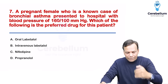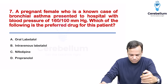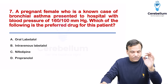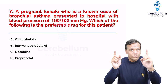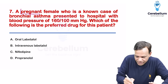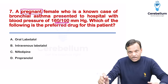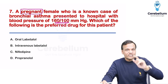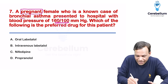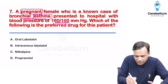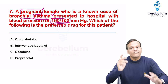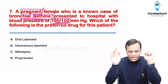A pregnant female who is a known case of bronchial asthma presented with BP 160/100 — which is the preferred treatment? Read the question carefully: there is pregnancy AND asthma. Antihypertensive drugs safe in pregnancy are remembered as 'better mother care during hypertensive pregnancy': beta-blockers (labetalol), Methyldopa, Clonidine, Dipines (nifedipine, nicardipine, amlodipine), Hydralazine, and Prazosin.